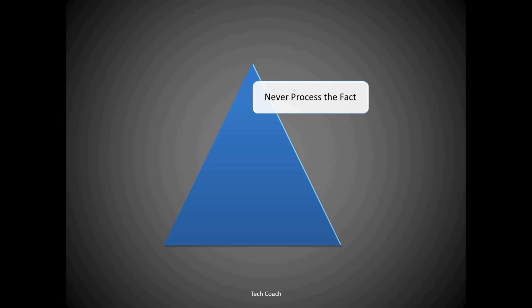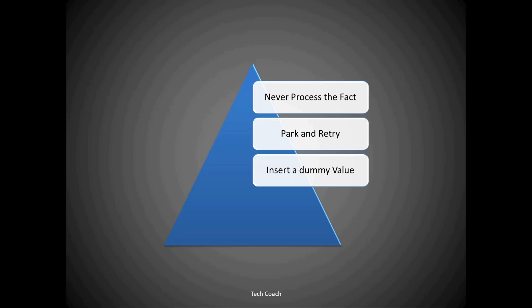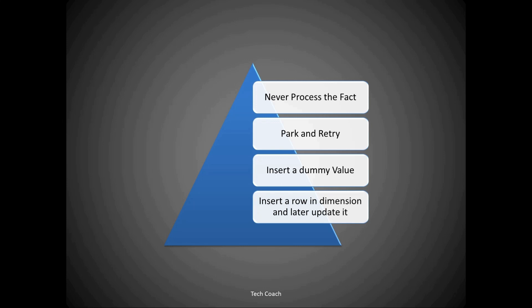The first approach is to never process that particular record — we simply discard it. The second approach is to park that record and try to process it as part of the next batch. The third approach is to insert a dummy value in our fact table — this is very popular, and if you are working in a warehouse there is a fair chance you are opting for the second or third approach. The fourth approach is to insert a row in the dimension table and later update it.